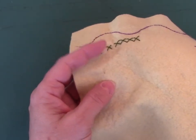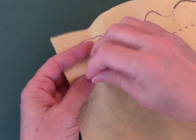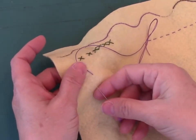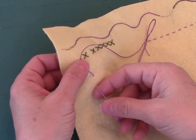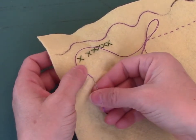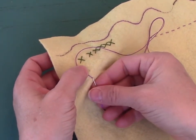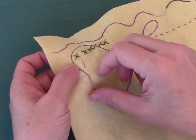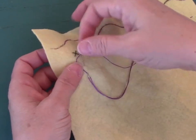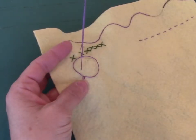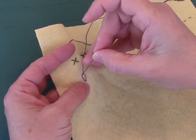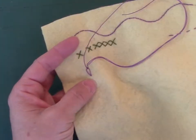The stitch I'm showing you now is a lazy daisy. We're going to come up where we want the point of our petal to be, so not the rounded part. We're going to go back down as close to A as possible. You may not want to be exactly in it. And then we're going to slide the needle however long you want your petal to be. I'm going to come up and make sure that my thread is under the needle. I'm going to pull the loop up, and then I'm just going to tack it down by going down over the top of my loop.